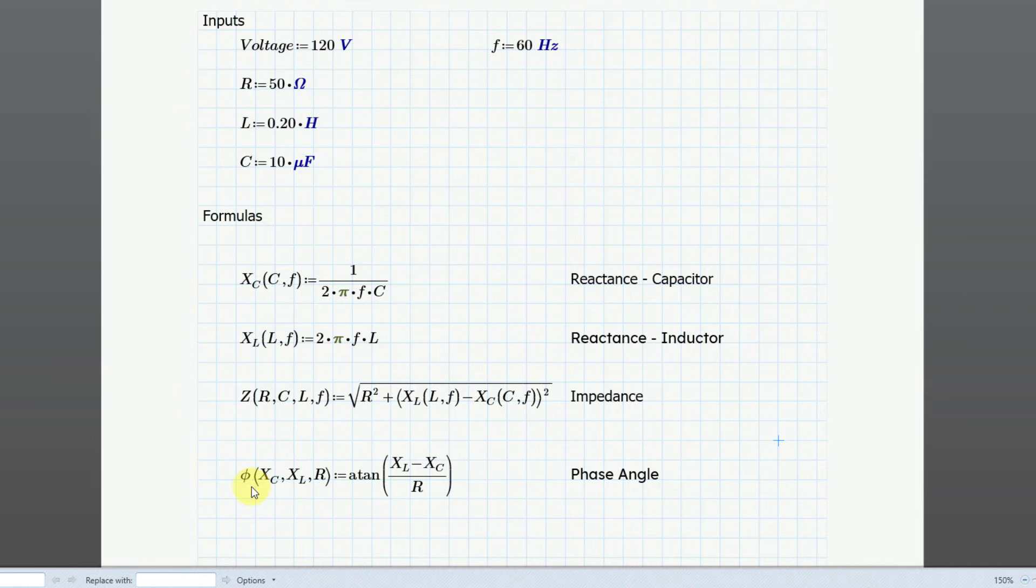Same thing for the phase angle. Instead of passing the reactances, I am going to pass the values for C, L, and F. So let's make those changes. Delete this, put in a C. Let's delete the reactance and put in an L. And let's add in one other additional variable.